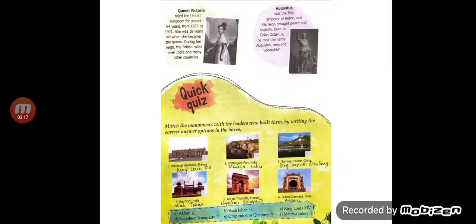First is the Palace of Versailles, France. It was built by King Louis XVI. We don't have space to write, so just write it down below the picture. Next is Chittorgarh Fort, India, built by Maurya rulers. Third is Summer Palace, China, built by Emperor Qianlong.